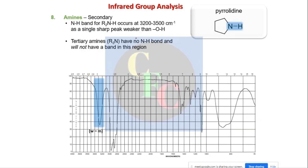Secondary amines have only one hydrogen attached to nitrogen, so they are more similar to alcohols, but the intensity is lower — medium to weak compared to the strong O–H band. Tertiary amines have no N–H bond because nitrogen is attached to all other groups except hydrogen, so tertiary amines will not show this N–H band at all.